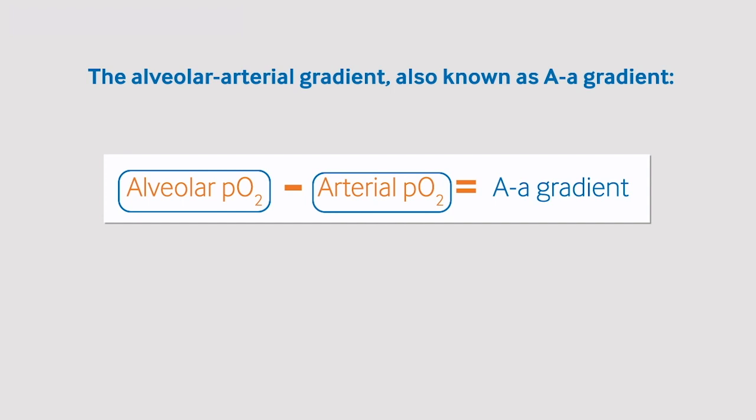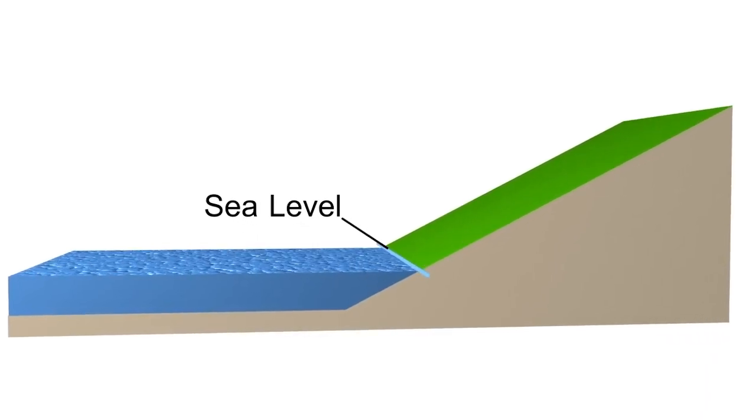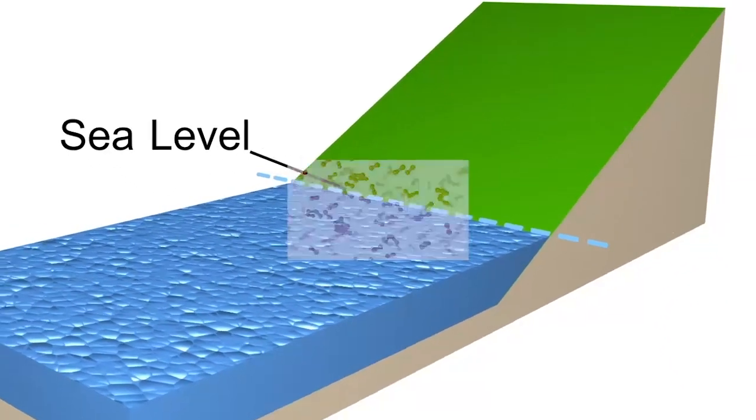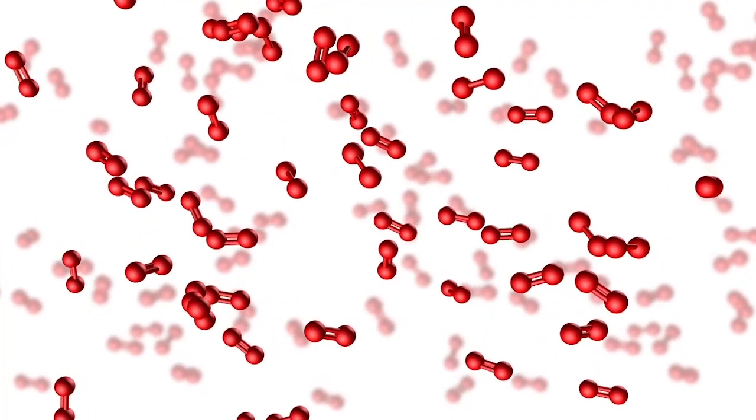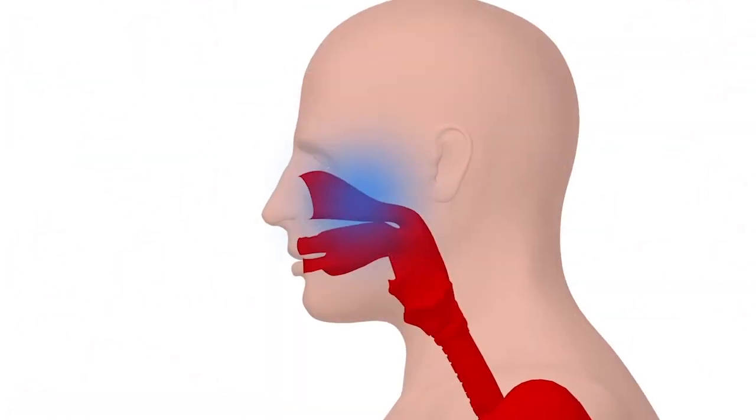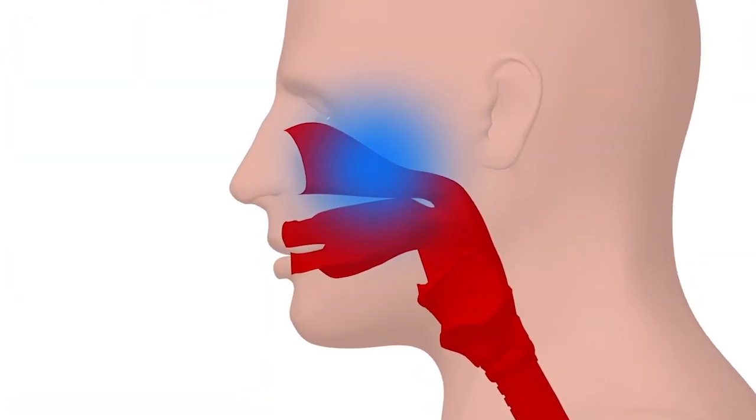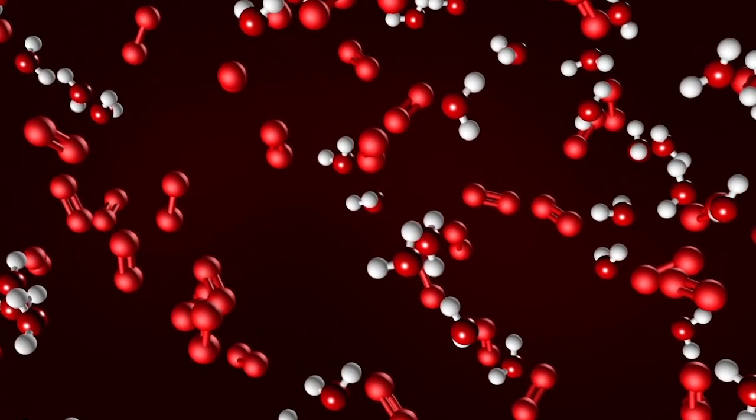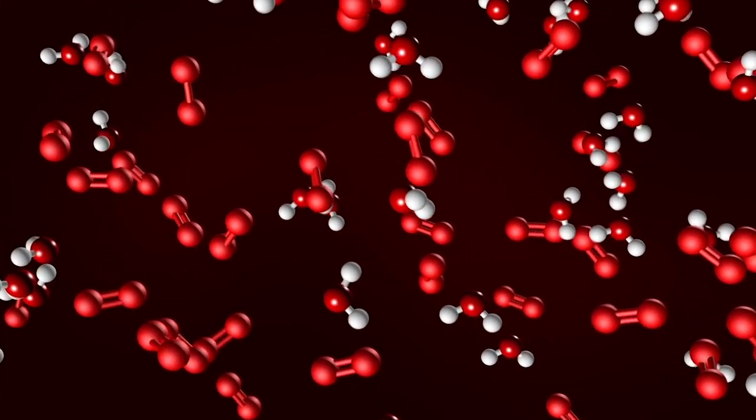However, deriving the alveolar PO2 is a bit more complicated. The partial pressure of oxygen at sea level is around 21 kPa. This is then saturated with water vapour in the upper airways before it reaches the alveoli, reducing the oxygen level to 20 kPa.